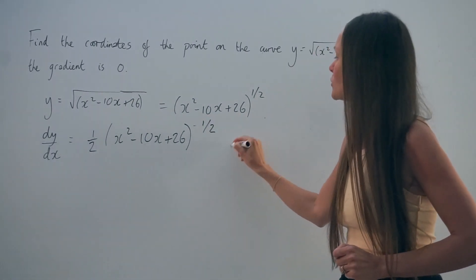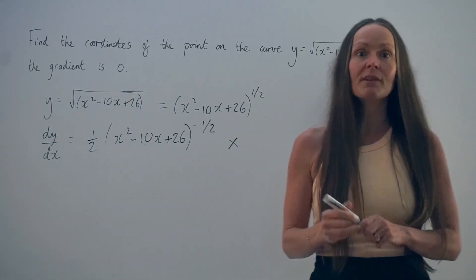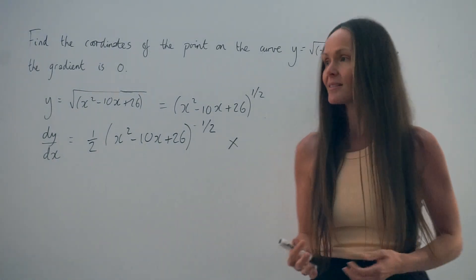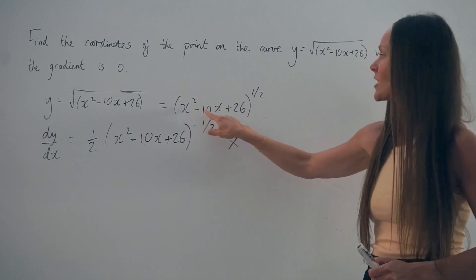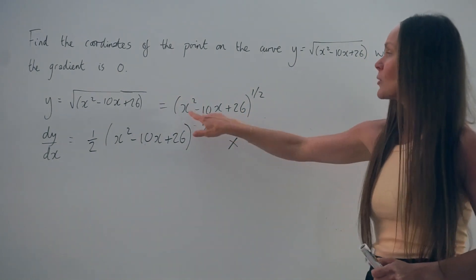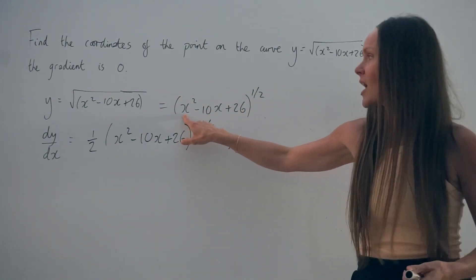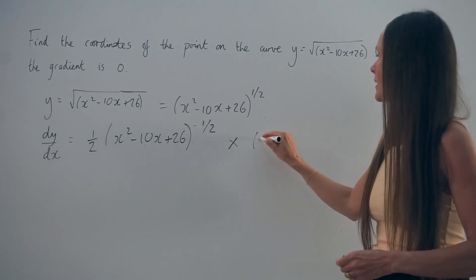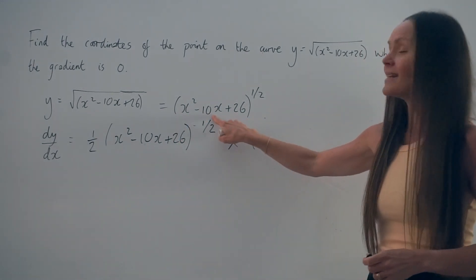Next, we have to multiply all of this by the derivative of what's inside the brackets. So I need to look inside the brackets here and differentiate each of these terms. So if I differentiate x squared, I'm left with 2x.